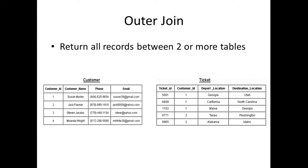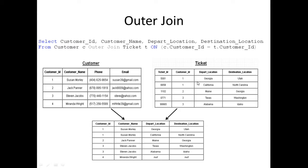Now, an outer join is when you return all records between two or more tables. So what we have here also is the customer table as well as the ticket table. This is the query that you will write in order to perform an outer join. It's pretty much going to look like the previous query, but the only thing that's changing is the outer join. When we join these tables, it's going to return all records between two or more tables.